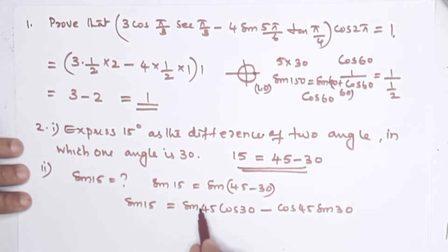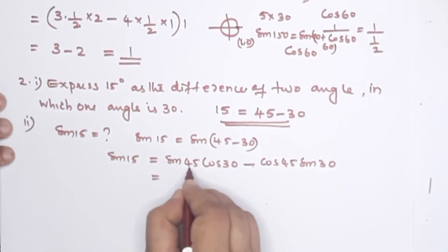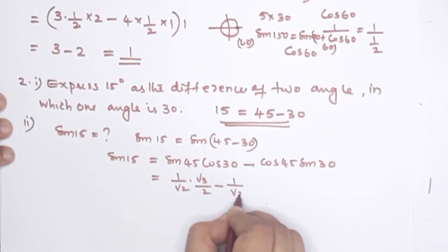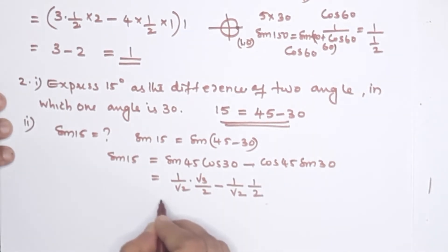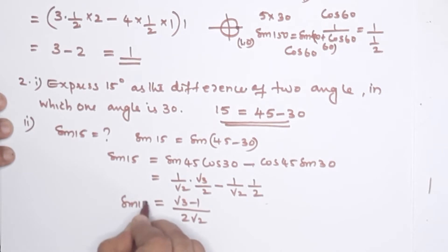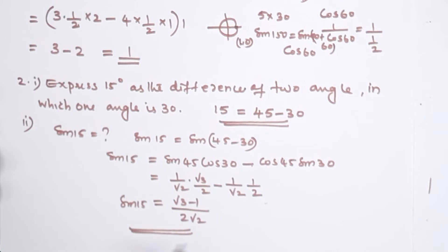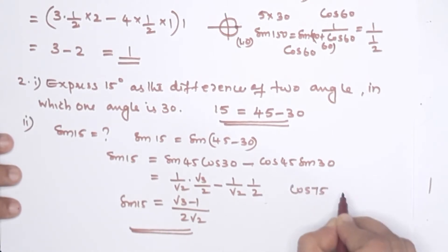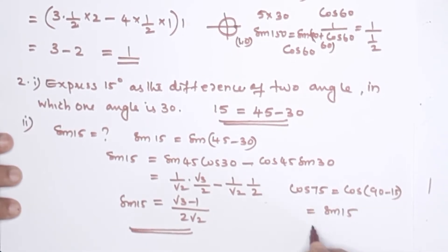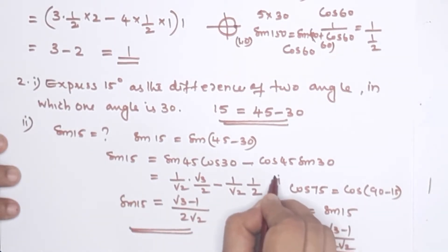We can write the A minus B formula. Substituting values: sin45 = 1/√2, cos30 = √3/2, cos45 = 1/√2, sin30 = 1/2. The denominator is 2√2, giving sin15 = (√3 − 1)/(2√2). Hence deduce cos75: cos75 = cos(90°−15°) = sin15° = (√3−1)/(2√2).